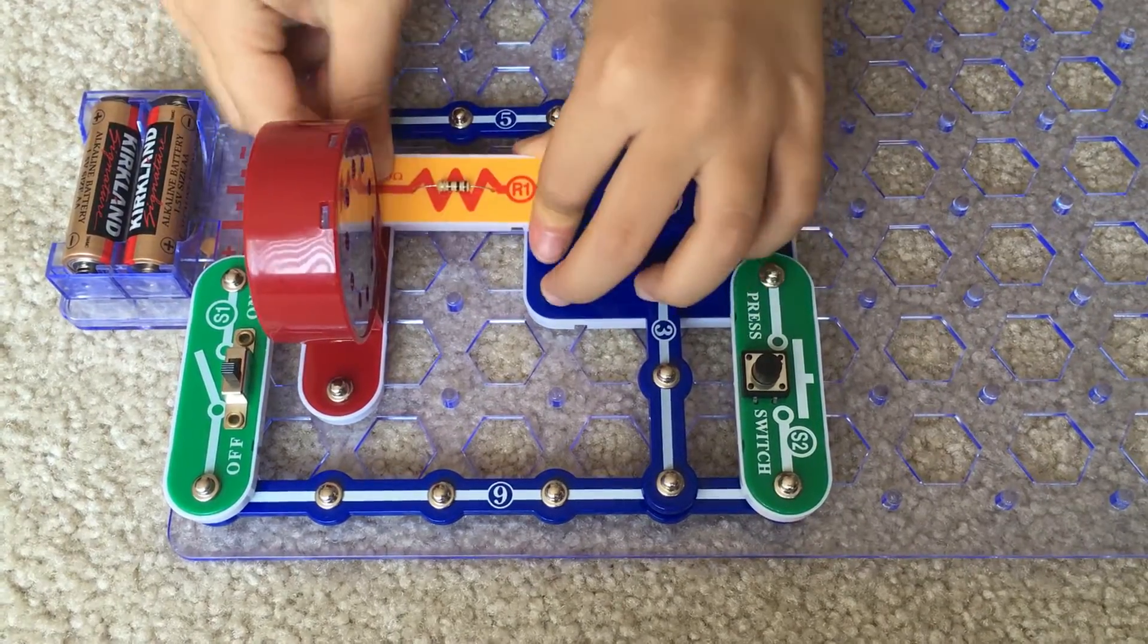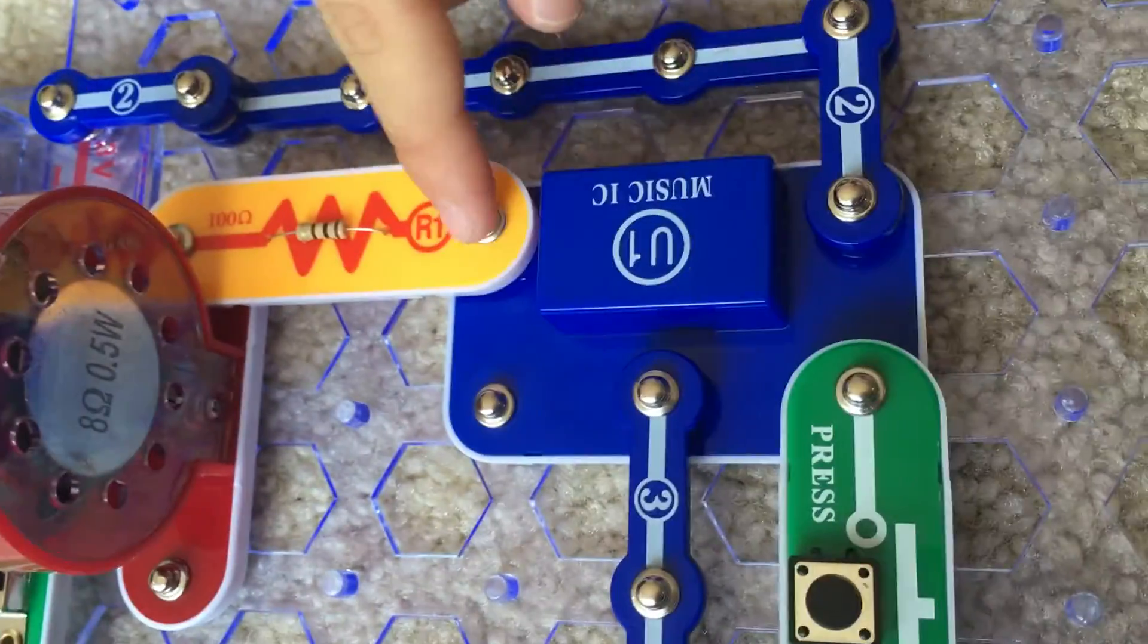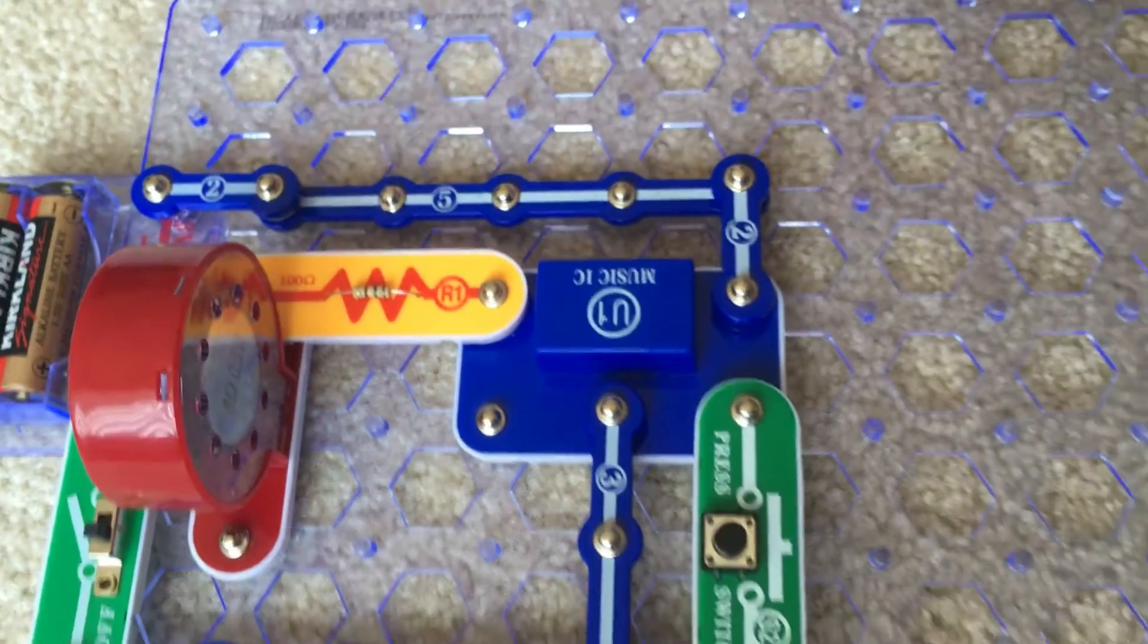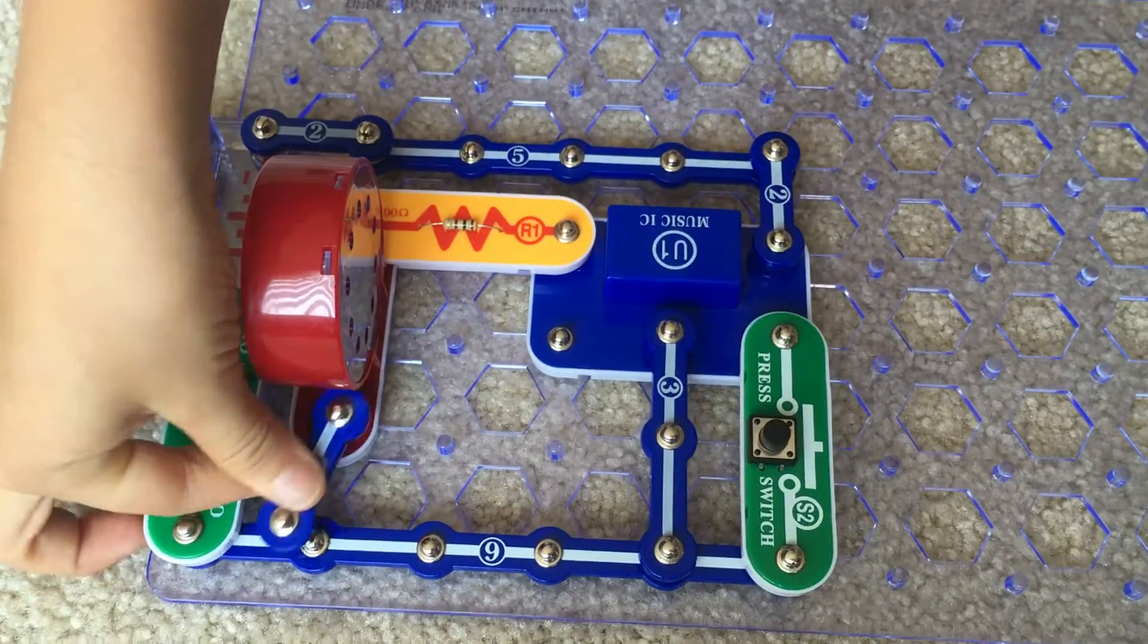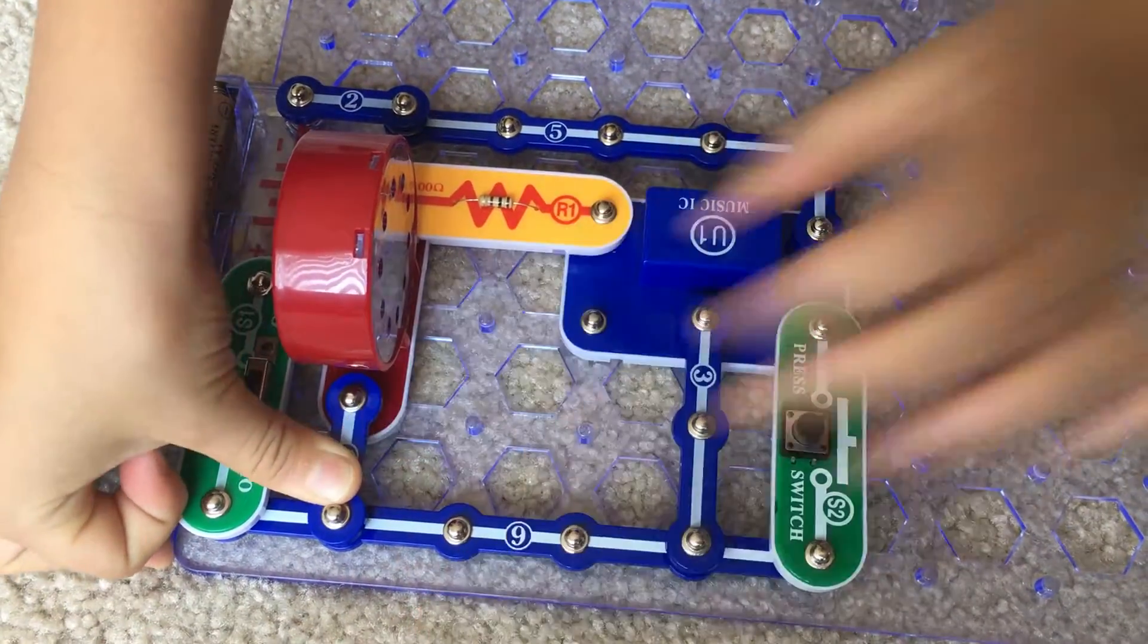And the R1 resistor right here, connected to the output and here, 2 snap wire between these two. It's harder fitting, like right here.